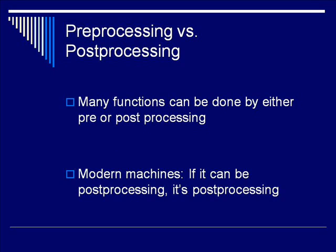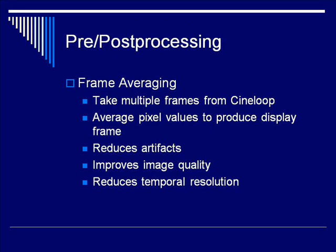As previously alluded to, many functions can be done in either pre-processing or post-processing. On modern machines, because we have very fast computers and lots of memory, these things are almost exclusively done in post-processing. The first of these is called Frame Averaging. This is another partial solution to the problem of having more frames coming from the transducer than we can display on the screen. We take multiple frames from the CineLoop and average the pixel values from those frames to produce the frame you see on screen. This does a pretty good job of reducing artifacts and often improves image quality, but it does so at the cost of reducing temporal resolution, because your ability to see individual frames at individual spots in time is reduced.